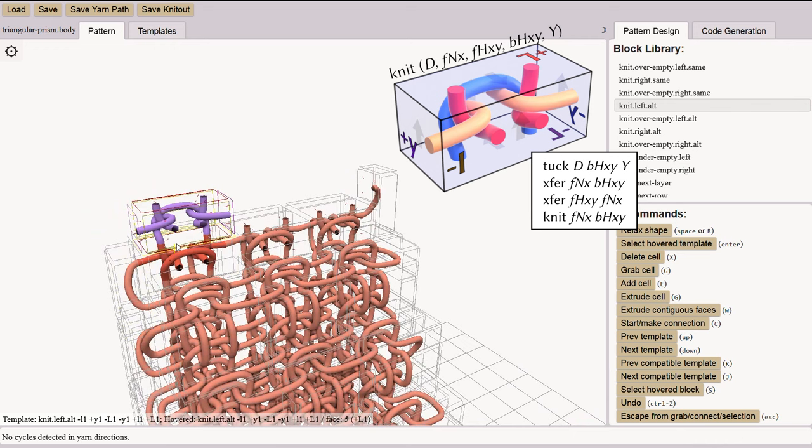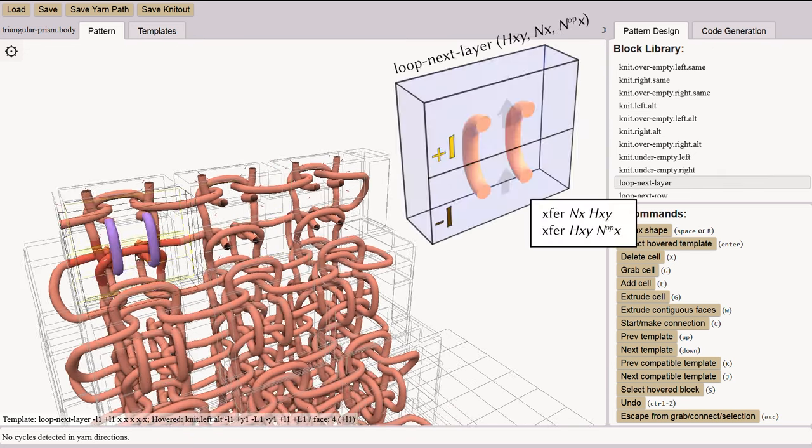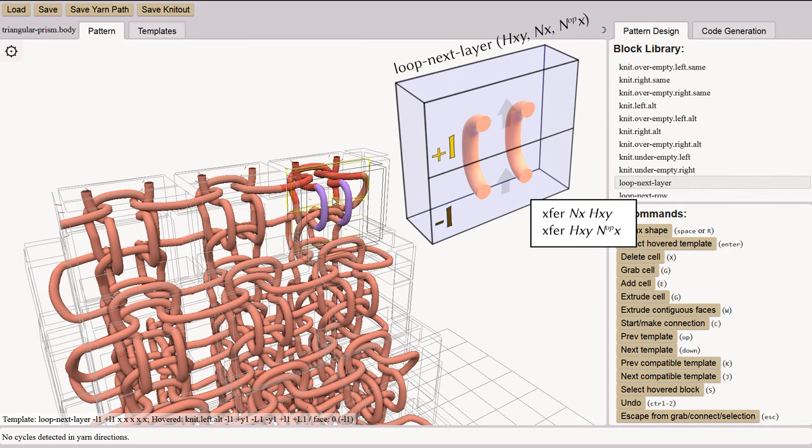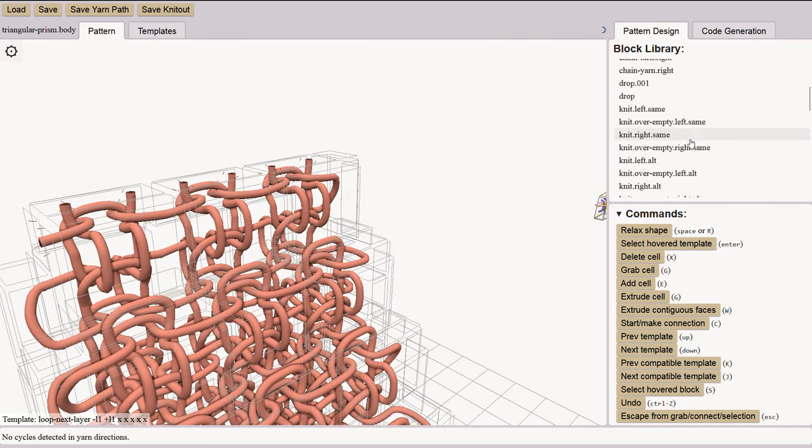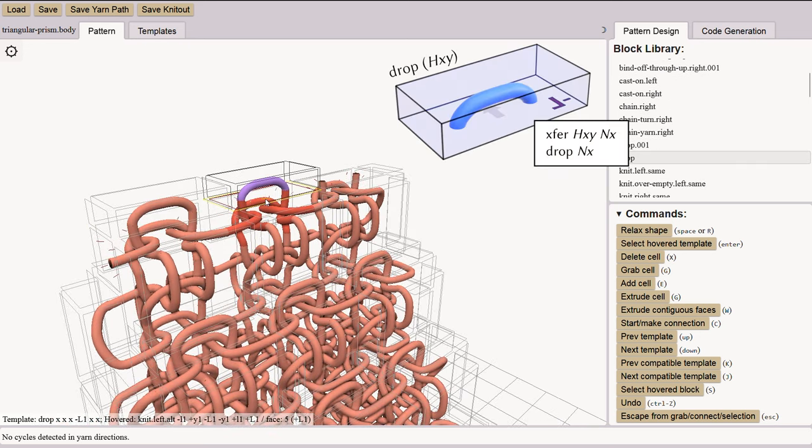Here we are adding knit blocks. Those blocks are associated with program fragments that represent machine operations. Next we add loop next layer blocks and drop blocks.